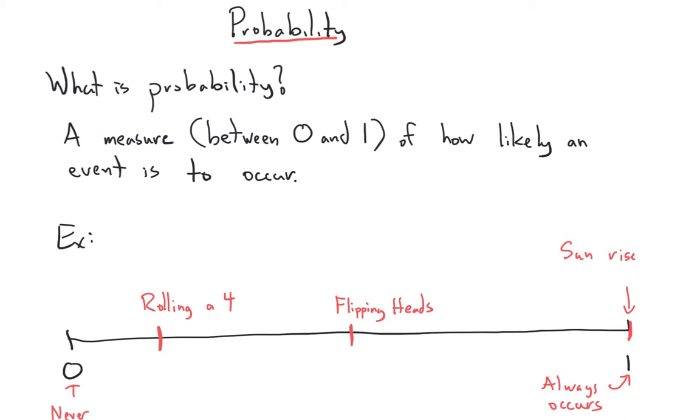That's something like rolling a seven on a six-sided die. There are no sevens, so it will never happen. And a probability of one is something always occurring. So something like the sun rising tomorrow. There's an example of an event that pretty much will always occur. To that, we assign a probability of one.